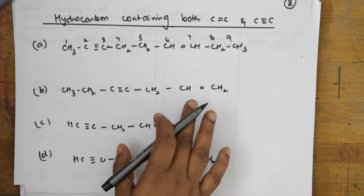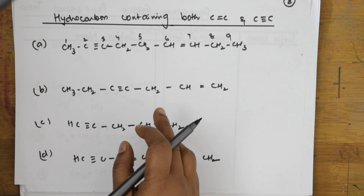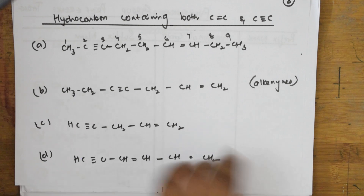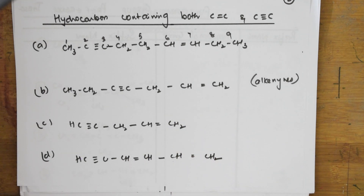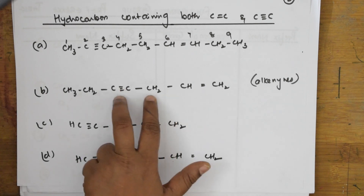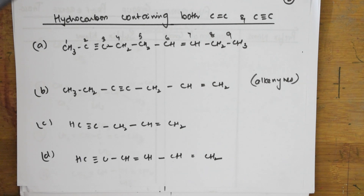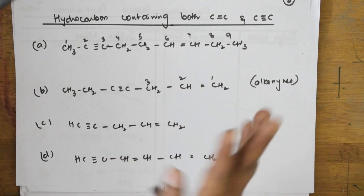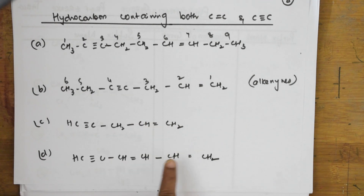When a hydrocarbon contains one double bond and one triple bond, it is called an alkenyne. The parent chain is numbered so that the multiple bonds get the lowest possible numbers. However, when the double bond and triple bond are at equivalent positions from both ends, priority is given to the double bond over the triple bond.